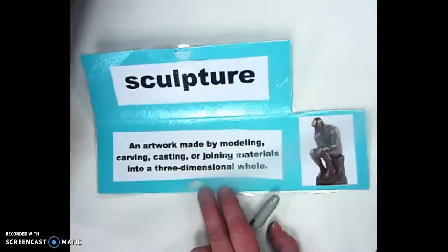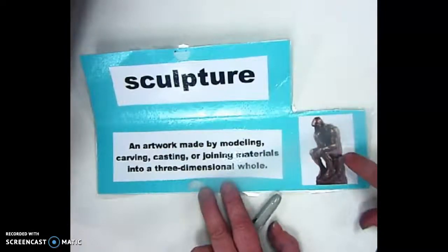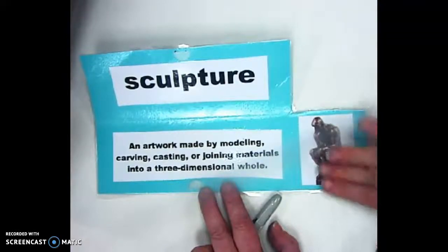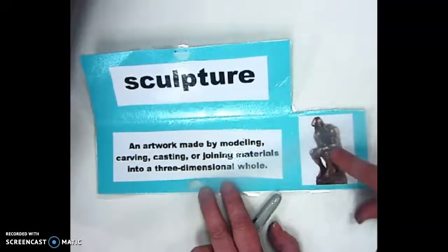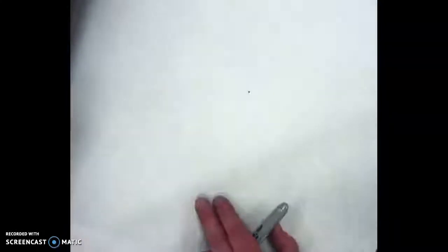Our project's start is considered sculpture. So it's an artwork made by modeling, carving, casting, or joining materials into a three-dimensional whole. So we are definitely going to be creating a human figure. Here we have a little picture of the Thinking Man by Auguste Rodin. And we are not going to be carving out of metal or anything like that. We're going to be simply using air-dry clay. But before we use the air-dry clay,